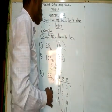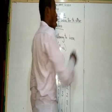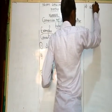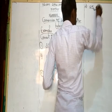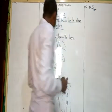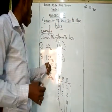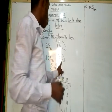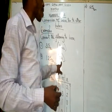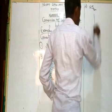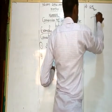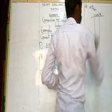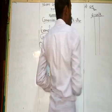Now, number 2. You want to convert 125 base 10 to base 6. Like I said, you divide by 6. Write 1, 2, 5, then divide by 6.